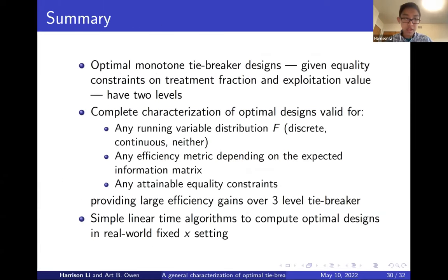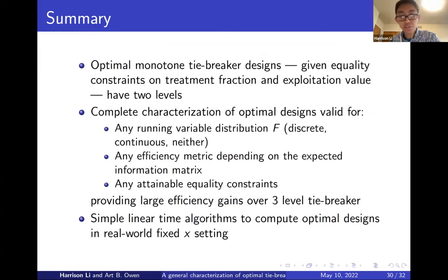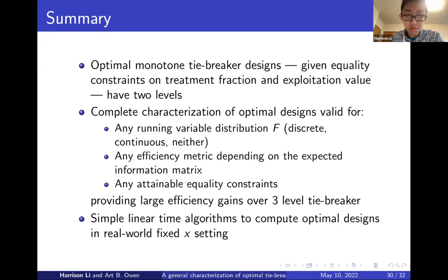To summarize: we've characterized optimal tiebreaker designs under a monotonicity constraint for arbitrary equality constraints on the treatment fraction and desired level of short-term gain. This characterization works for any running variable distribution F, any efficiency metric depending on the expected information matrix, and any attainable equality constraints on treatment fraction and short-term gain. We have simple algorithms to compute these designs in practice in a fixed-x setting.